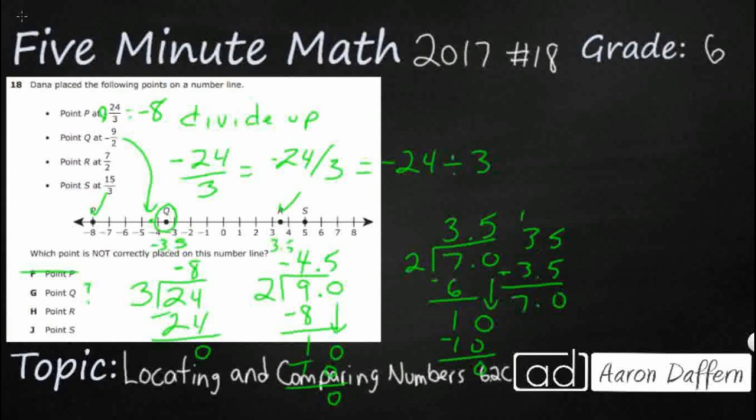So let's just check S. Now that's going to be easy. 3 into 15. That's a fact. That's going to be 5. There's no remainder. Let's just double check. Our S is at the 5. Our S is at the 5. So P, R, and S are correct. Our issue here is this 9 halves. Because that is at the wrong spot. It's at negative 3.5. It should be at negative 4.5. So our answer is going to be G, point Q.